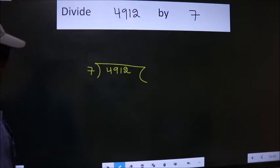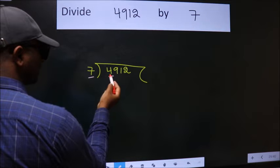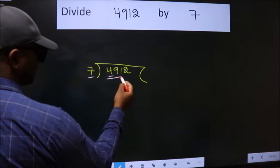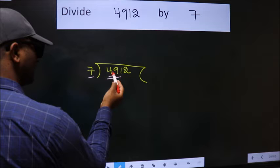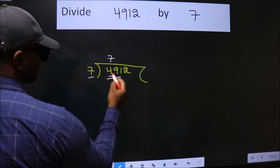Next, here we have 4. Here 7. 4 is smaller than 7, so we should take 2 numbers, 49. When do we get 49 in 7 table? 7 times 7 is 49.